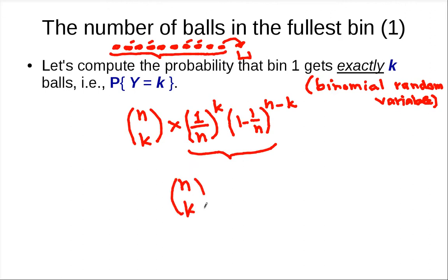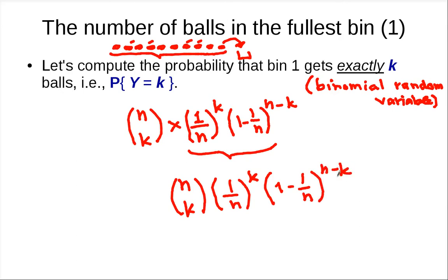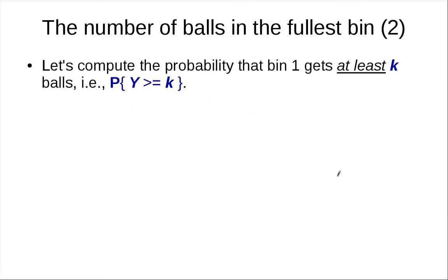Now, we want to consider some bad events — where some bin gets at least k balls. We want to use k as the upper bound to guarantee that no bin would get at least k balls. So the probability we just computed is at the boundary, but we want to find the probability that it gets at least k.